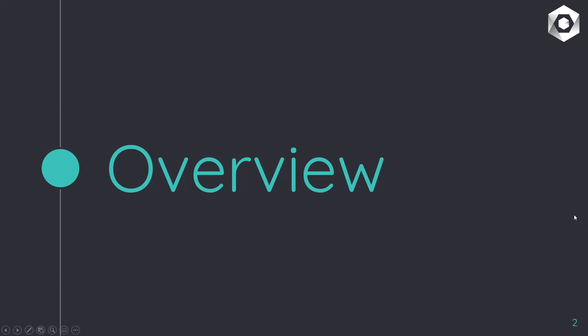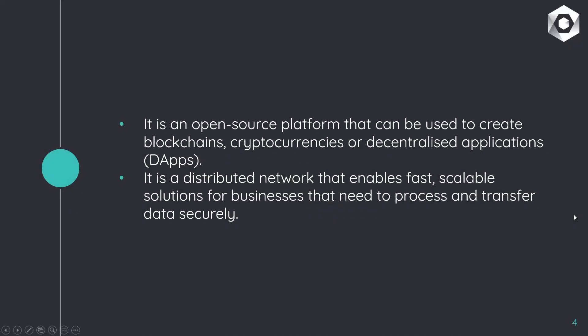Starting off with the overview: what is Constellation? In simple terms, Constellation is an open source platform that can be used to do anything from create blockchains to mint cryptocurrencies and develop decentralized applications. It's a distributed network with nodes in different locations around the world, making it decentralized, that enables fast, scalable solutions for businesses that need to process and transfer data securely. The key benefits are scalability and the ability to accommodate massive amounts of data.